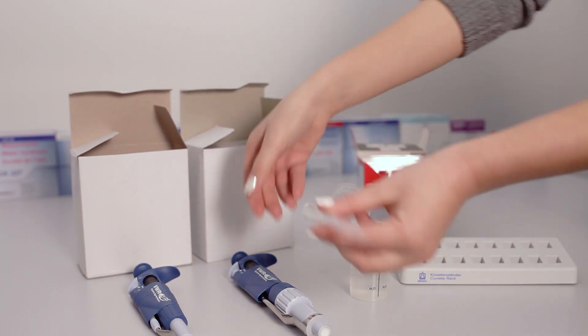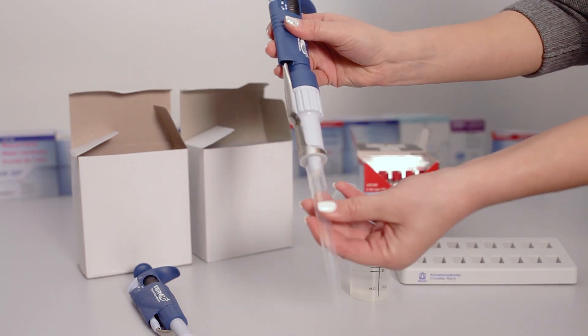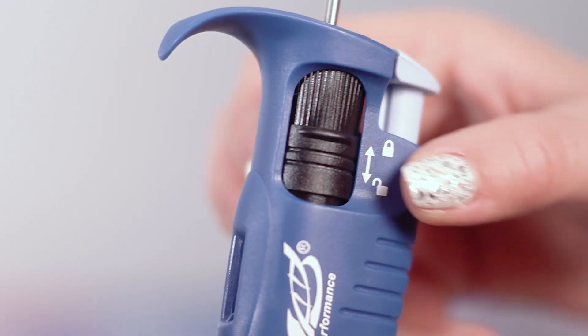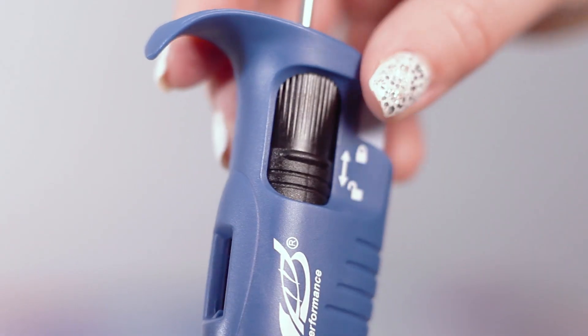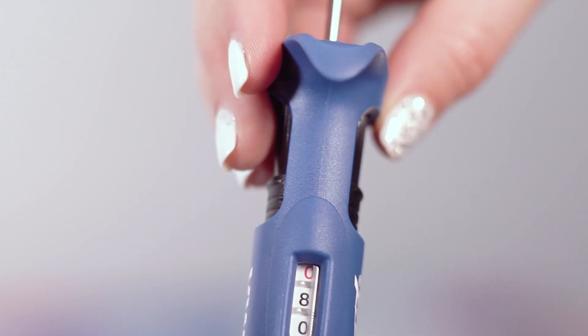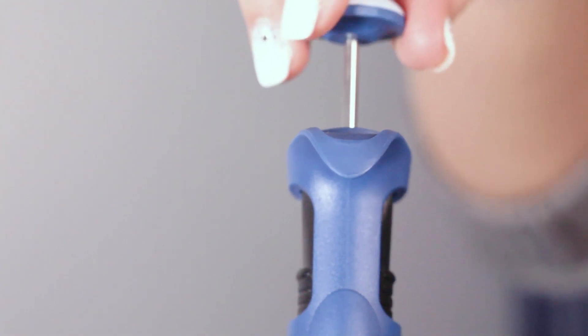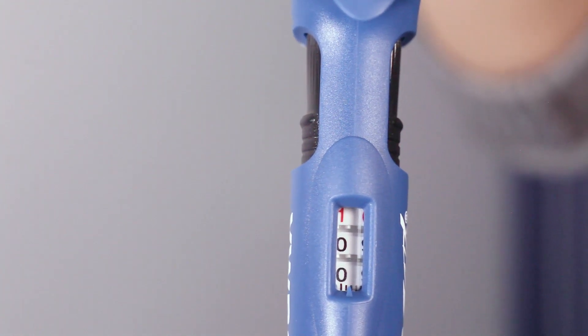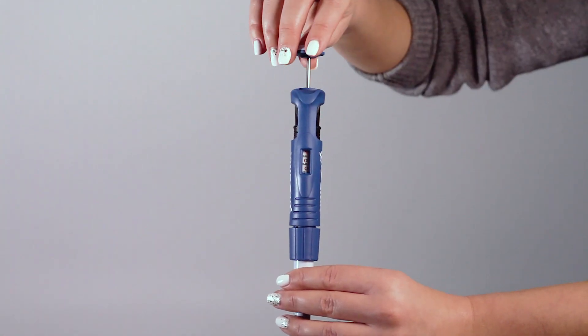The tip should be put on the pipette. Then the desired amount of sample should be adjusted by unlocking the pipette and rotating the button. When the amount is set, the pipette should be locked again.